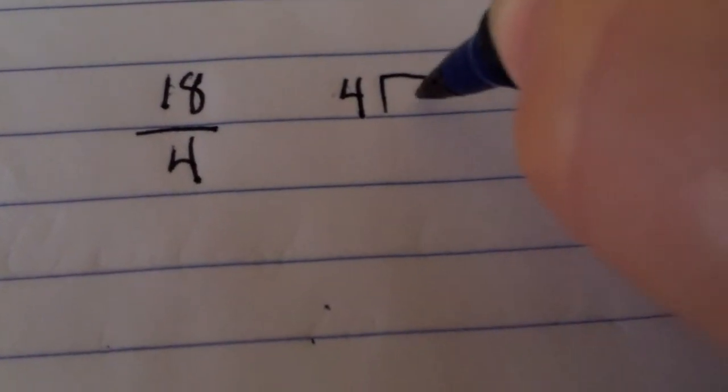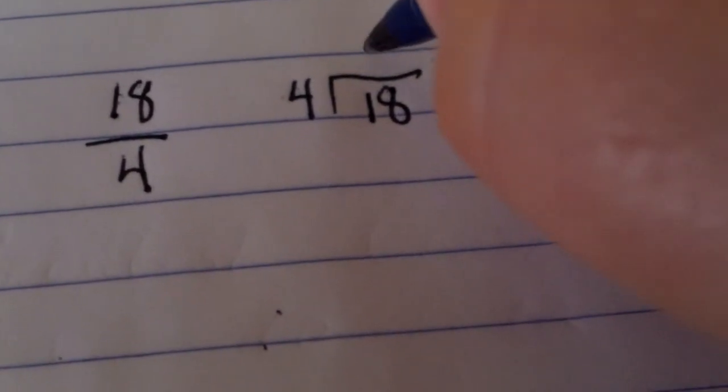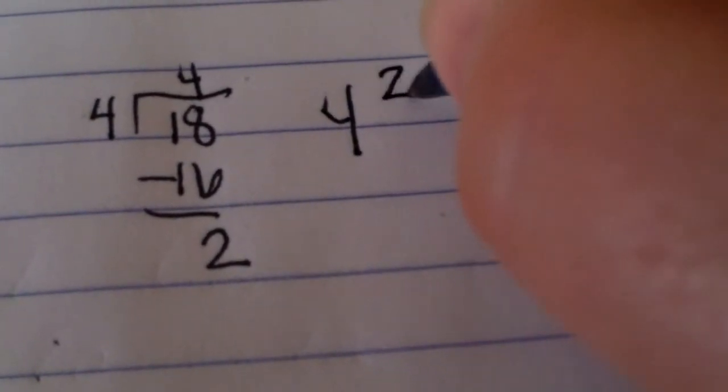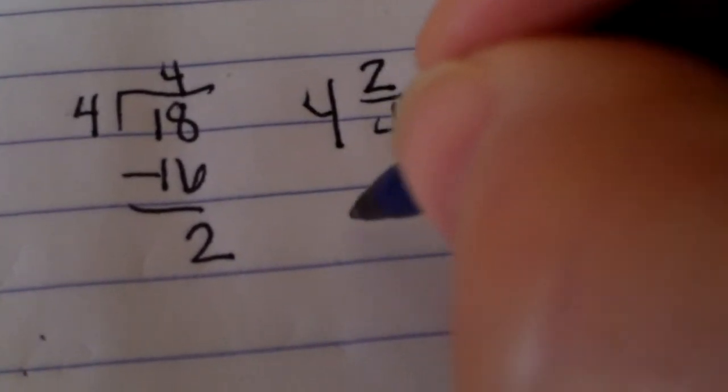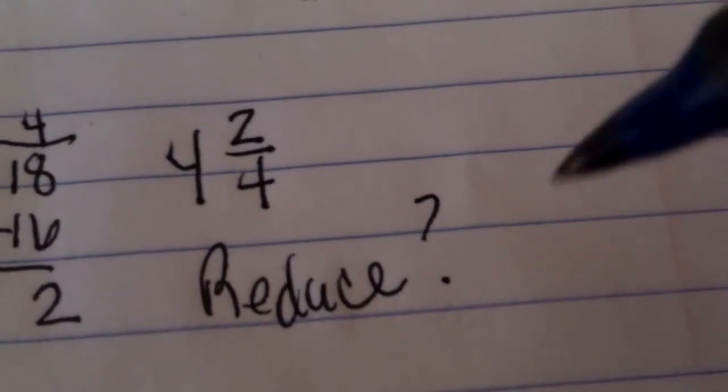Now you also want to make sure you can go in the other direction as well. Let's say that we start with 18 fourths. Well, you would actually have to go and do the division. Four goes into 18, how many times? And so you actually go through and do the division. Your quotient is your whole number. And then you put your remainder over the divisor. But the last burning question, see if you can reduce.